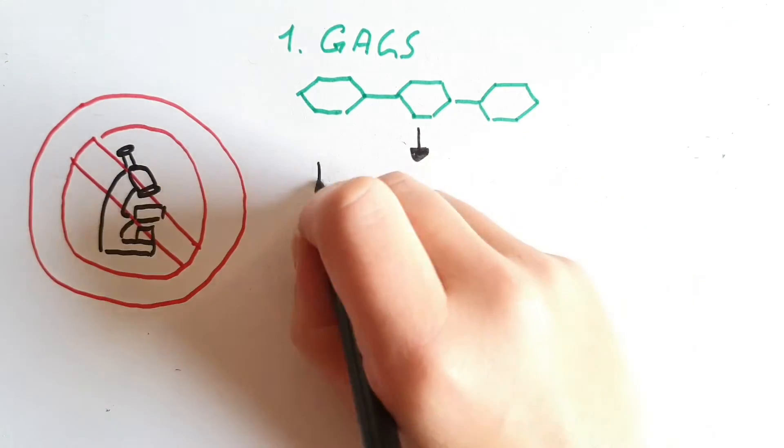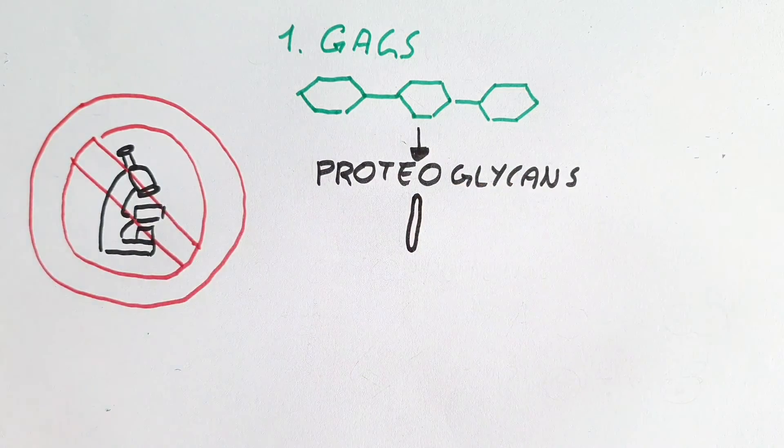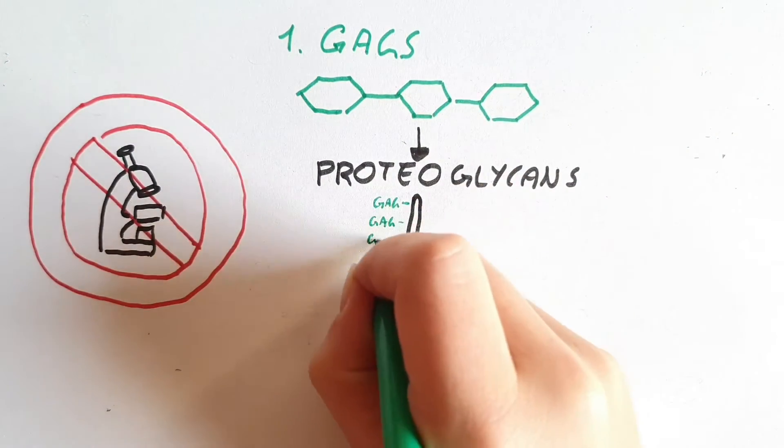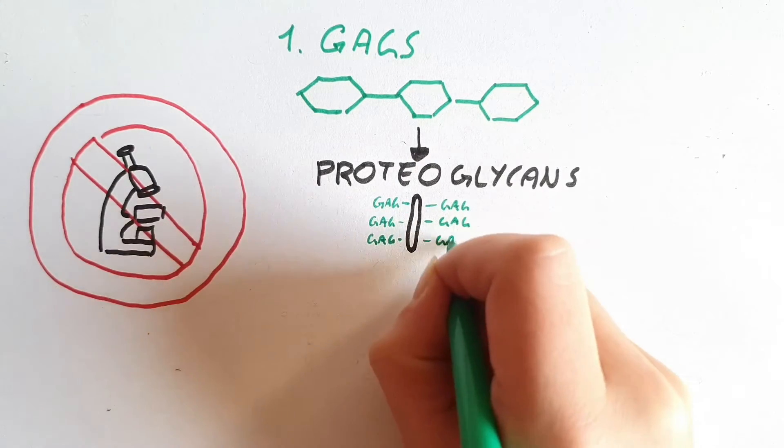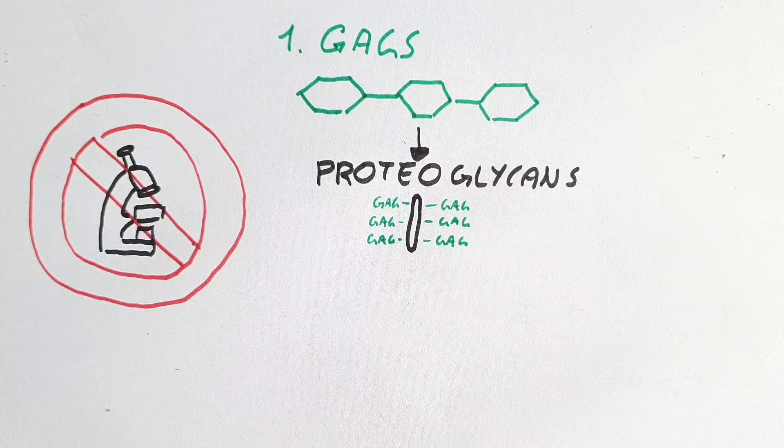The main components of ground substance are glycosaminoglycans or GAGs, and these are long chains of unbranched polysaccharides which are the main component of proteoglycans.